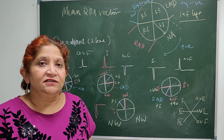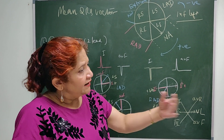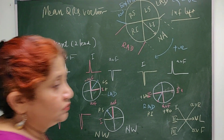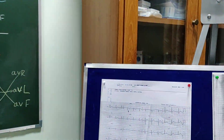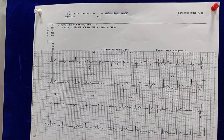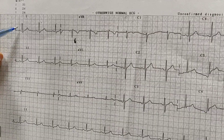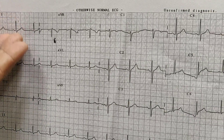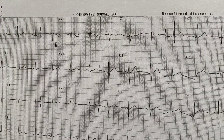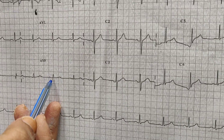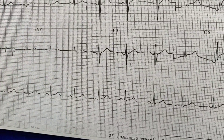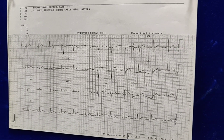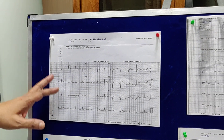Now let us see this axis on an actual electrocardiogram. By the quadrant method, look at Lead 1 — it is majorly positive, with a negative portion of barely half a millimeter. Then look at AVF — AVF is also positive. When both Lead 1 and AVF are positive, it is a normal QRS axis, falling in the left inferior quadrant.